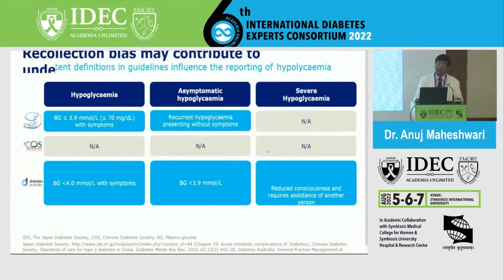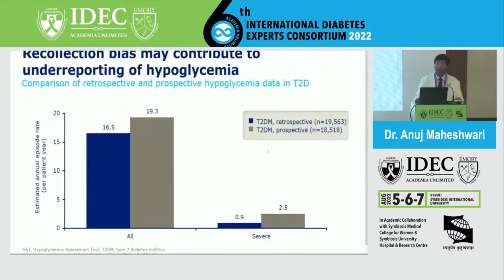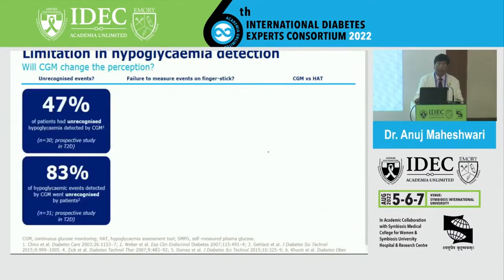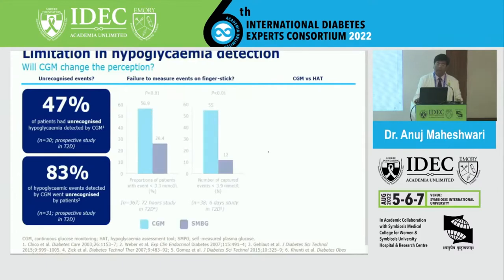Most hypoglycemia data relies on patient recollection. Many times patients are not able to properly recollect the hypoglycemic events that occurred, leading to significant under-reporting. Studies show that 47% of patients had unrecognized hypoglycemia detected only by continuous glucose monitoring, and 83% of hypoglycemia detected by CGM was unrecognized by the patient - illustrating how many events are missed by patients and clinicians alike.